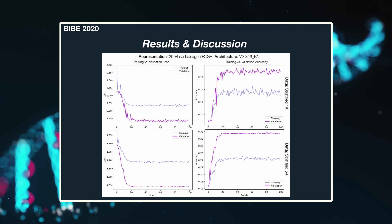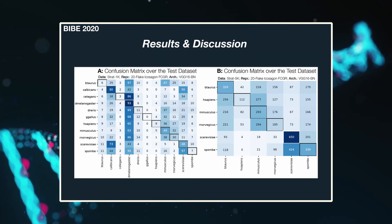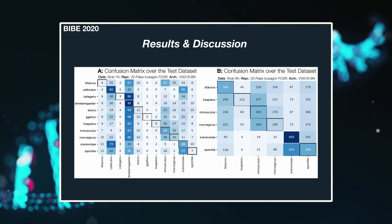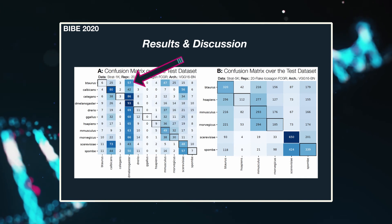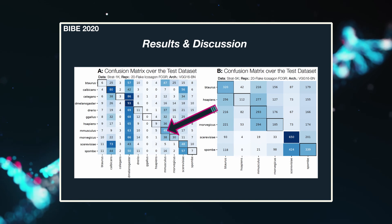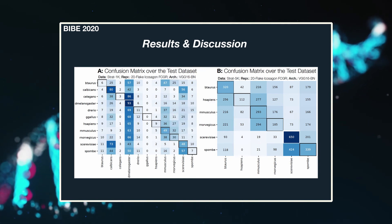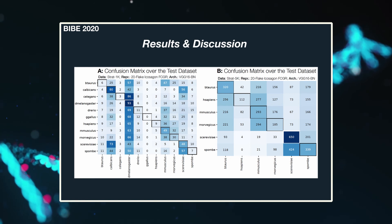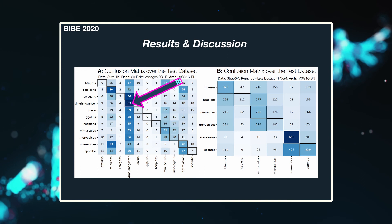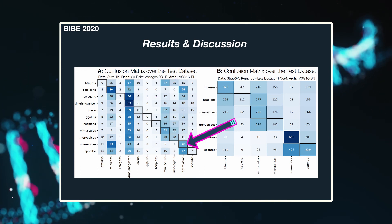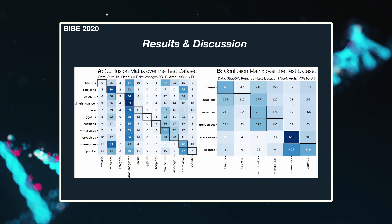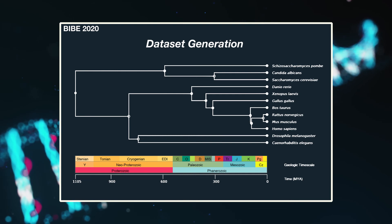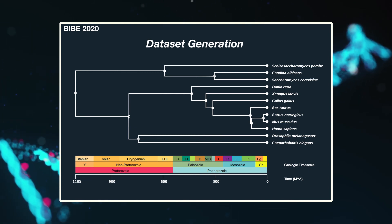To better understand why the test accuracy is only modest, we look at the confusion matrices themselves. It is immediately apparent that the majority of samples in the stratified 1,000 dataset are being predicted to belong to D. melanogaster, the fruit fly. A number of expected errors are also apparent: many of the mouse errors are attributed to evolutionarily proximal organisms such as rat, human, and bull. Similarly, many of the yeast errors are attributed to S. pombe and C. albicans, and the converse is also true for C. albicans. The model performed best for Drosophila melanogaster, C. albicans, mouse, and yeast, and failed to effectively classify proteins for the remaining seven organisms. Combining yeast and C. albicans, these three groupings are all evolutionarily distant from one another, suggesting the model may not be sufficiently large enough to represent more distinct evolutionary relationships, making the task more difficult.